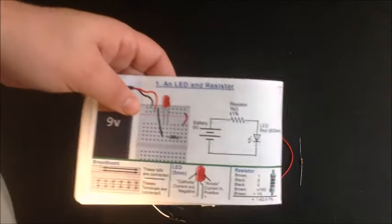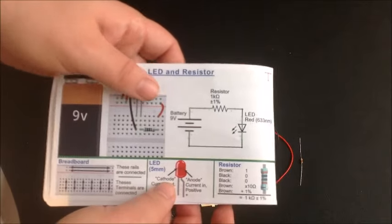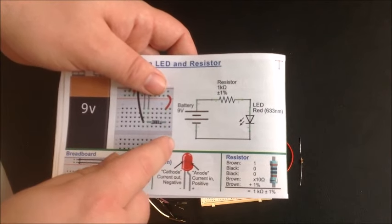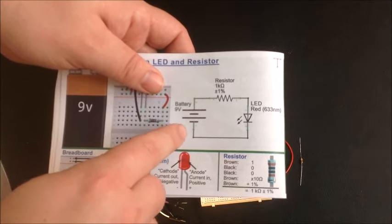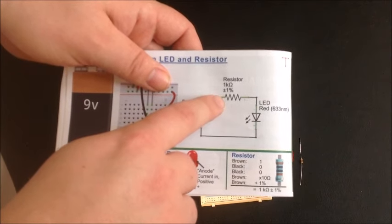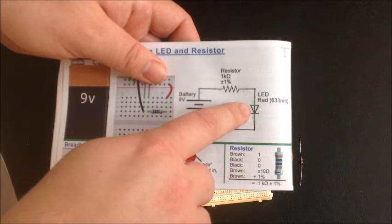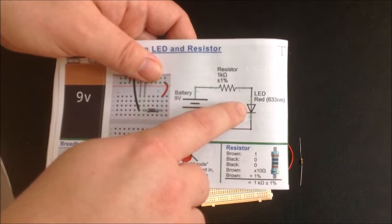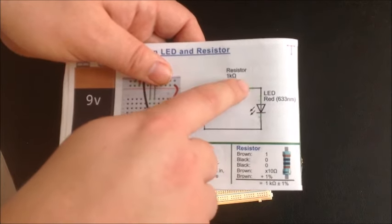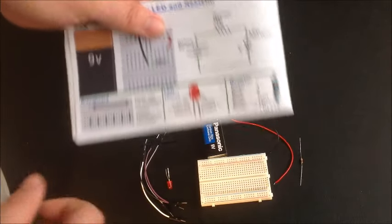We start off really simple. We're just going to make a circuit that turns on an LED. We need to put a resistor in or else there'll be too much power through the LED and it will burn out. This is the basic circuit.